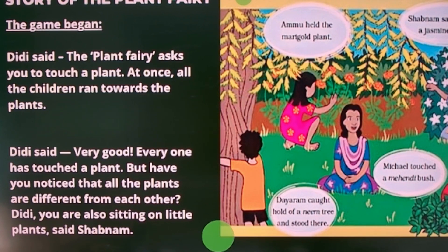Dili spoke and said, 'The plant fairy asks you to touch a plant at once.' So all the children ran towards the plants. She said, 'Very good — every one of you has touched a plant. But have you noticed that all the plants are different from each other? Did you see them? Did you feel them?'